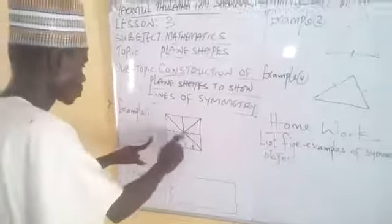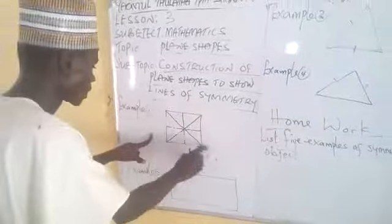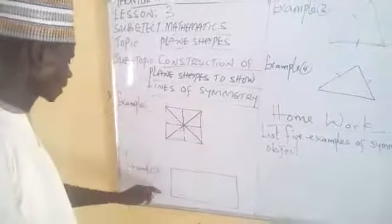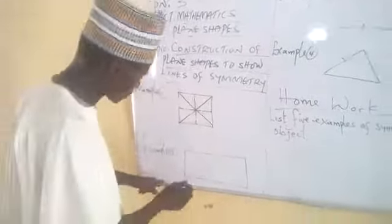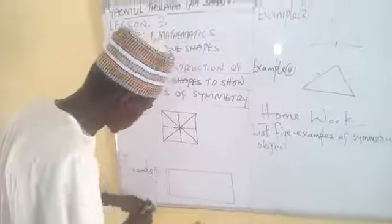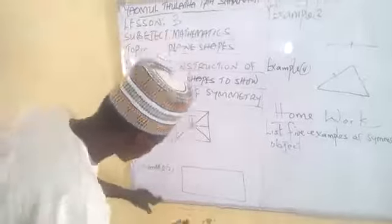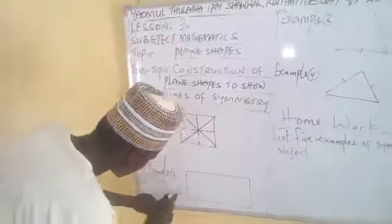It has four lines of symmetry: one, two, three, four. Now the next example — this is a rectangle. The rectangle has been drawn already. Let us see how to draw the lines of symmetry.